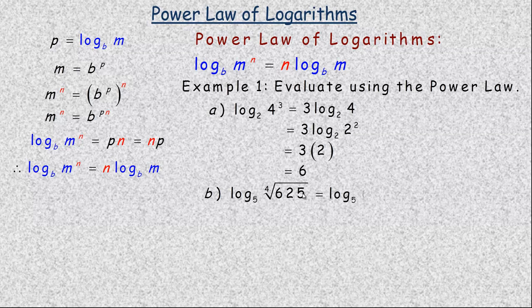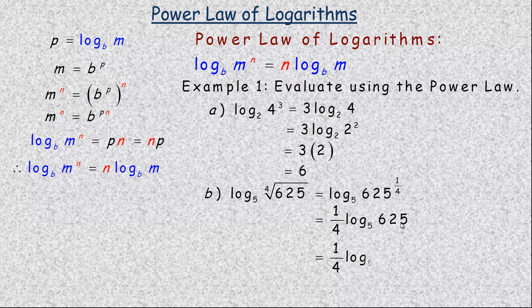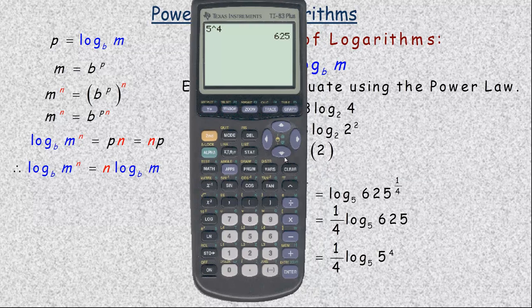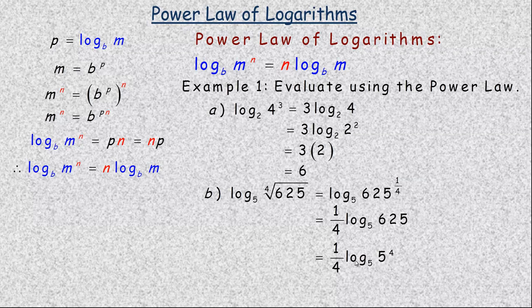For the second example, the fourth root is the power of a quarter. Using the power law, we write this as a quarter times the logarithm base 5 of 625. Now 625 can be written as a power of 5 — it's 5 to the fourth, which you can verify on your calculator. Since the logarithm has the same base as the base of the power, the logarithm equals the exponent 4. So we have a quarter times 4, which equals 1.